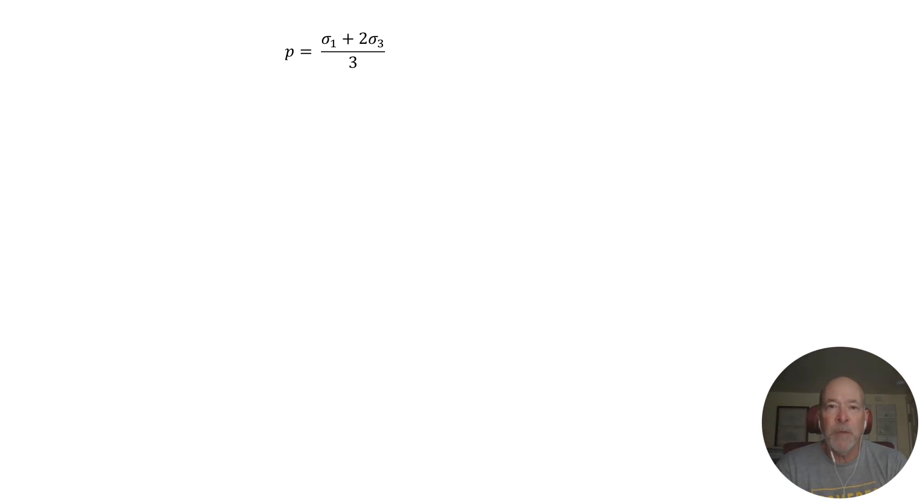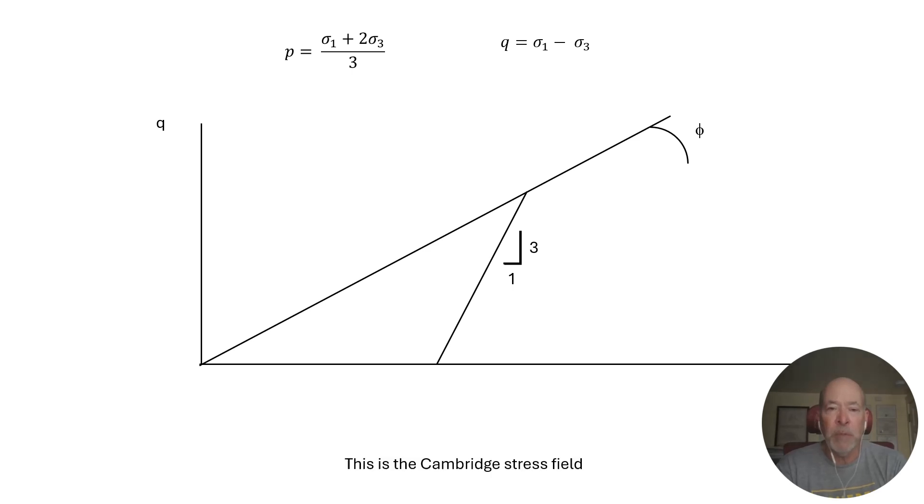Guess what? There's another way to express a stress path, and that is in P and Q. And this is probably the more popular, more common approach. And so this is what it looks like. That's a stress path. It has a three to one slope rather than one to one. So you can recognize immediately in total stress that these are different approaches. And this is the Cambridge stress field. And this is the stress path in the Cambridge stress field.